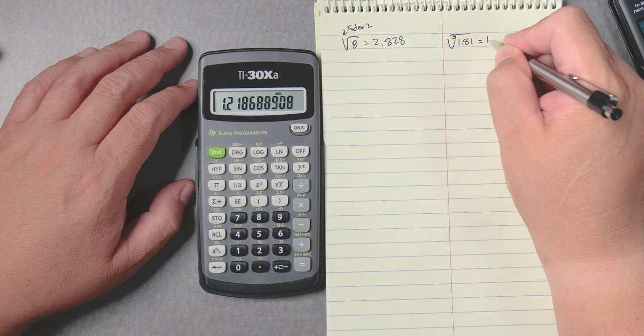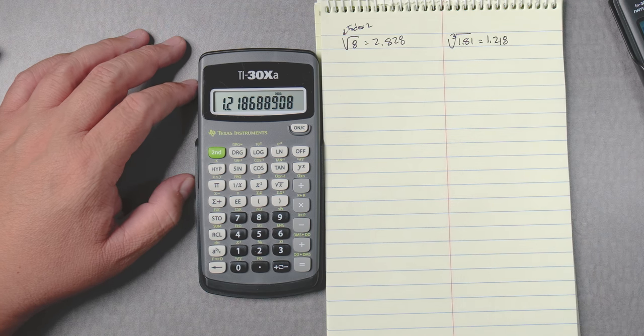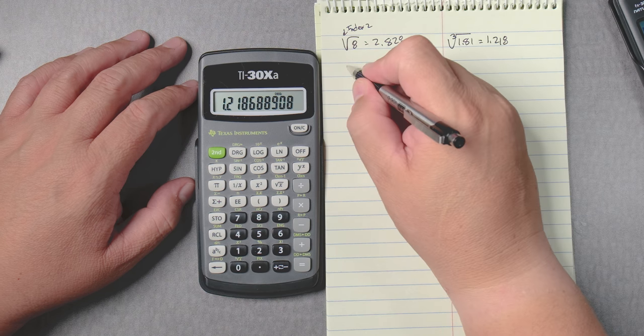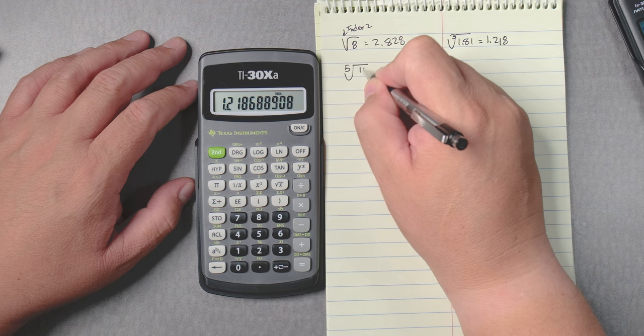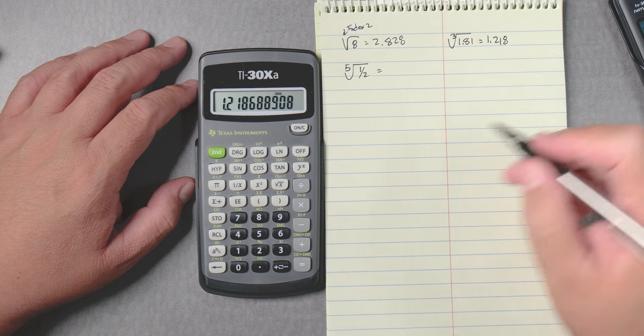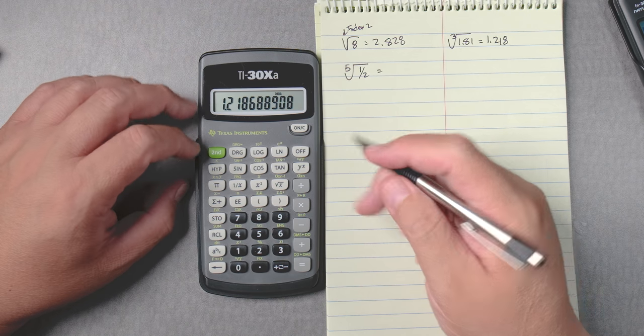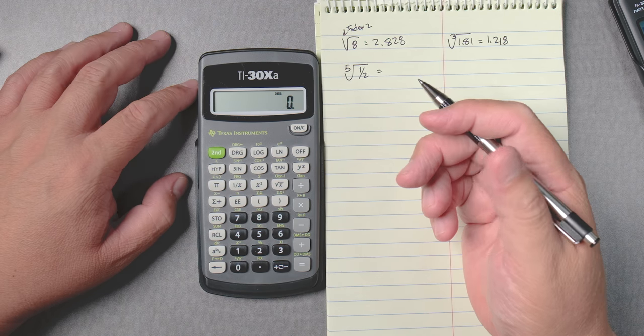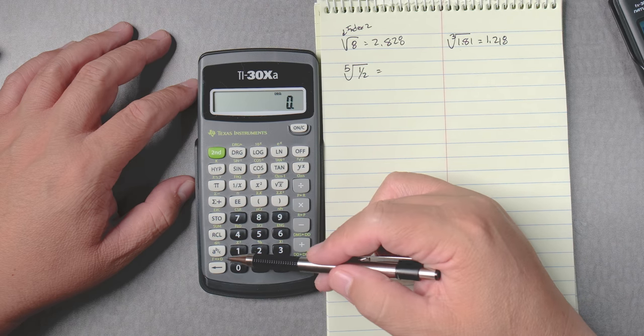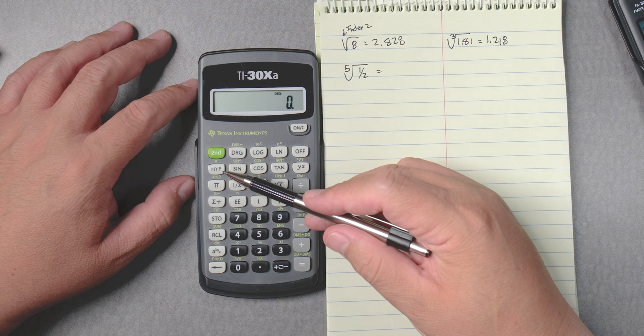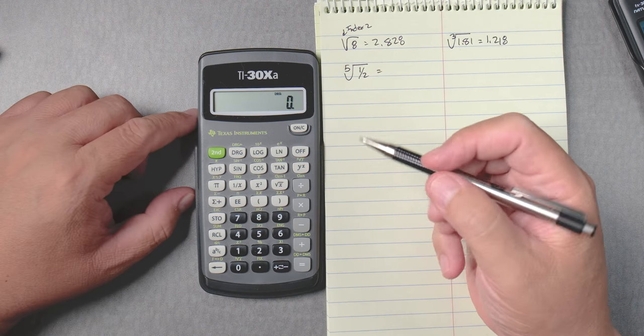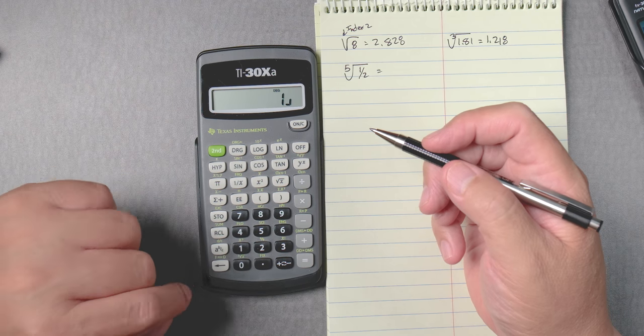We can also do something like the fifth root of one half. For this calculator we're going to press the on button. There is an abc button.